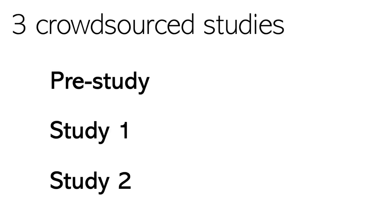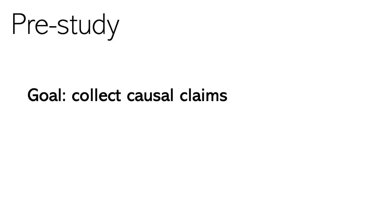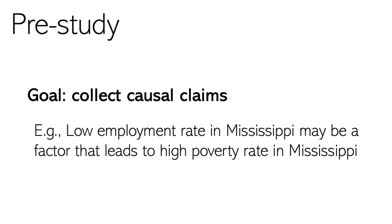To address these questions, we conducted three crowdsourced studies. As a first step, we conducted a pre-study to collect causal claims with different levels of plausibility. A causal claim may be something like: low level of employment rate in Mississippi may be affected and lead to high poverty rate in Mississippi.